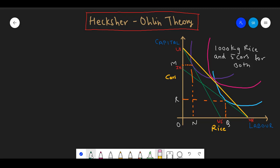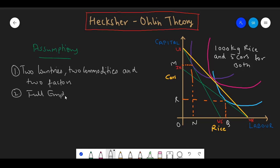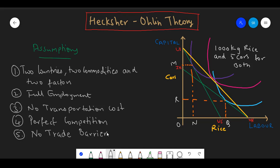The HO theory is based on certain assumptions. These assumptions are: the model has two countries, two commodities and two factors; there is full employment in both countries; there is no transportation cost; perfect competition exists in both product and factor markets; and there is free trade in both economies.